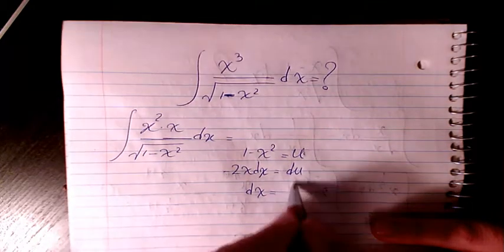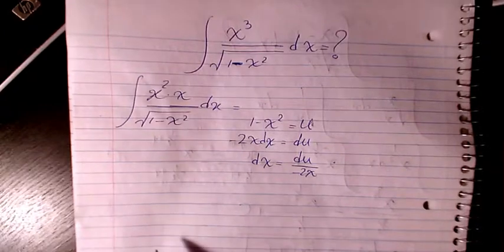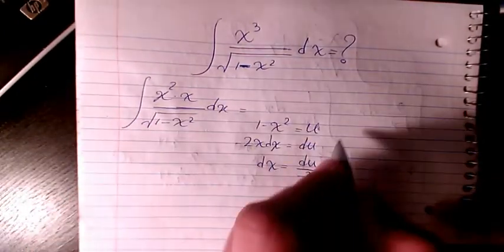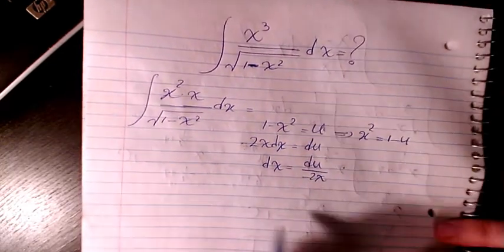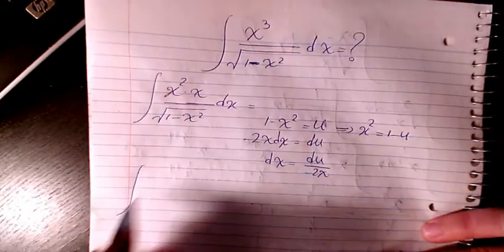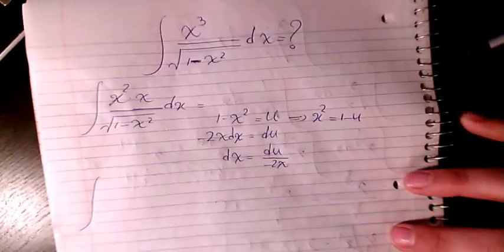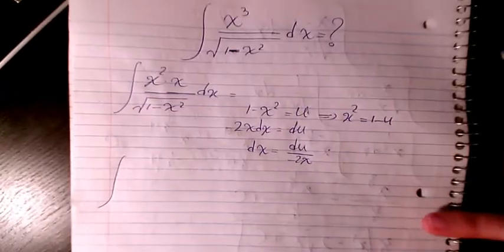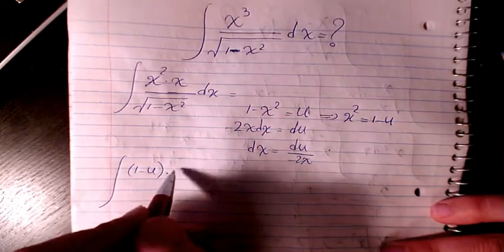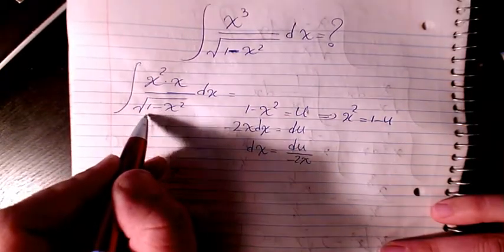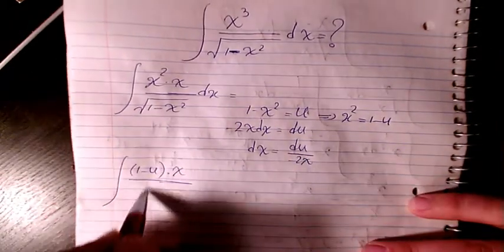Then dx will be du over negative 2x. Here x squared will be 1 minus u. So let's substitute: instead of x squared I can write 1 minus u, and instead of x I just put x for now.